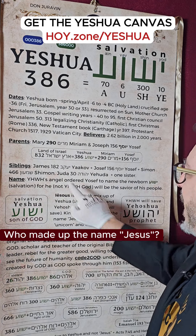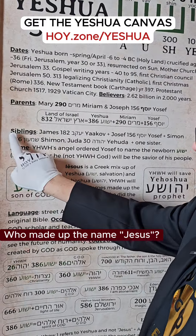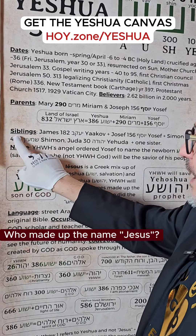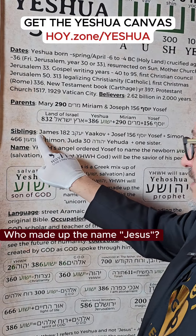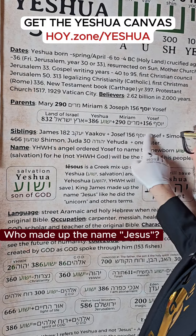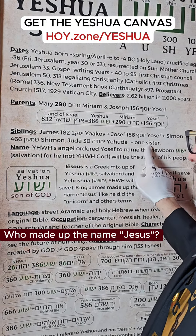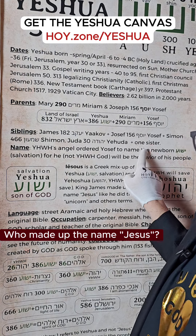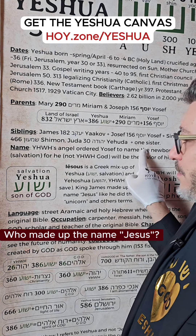Going back, we can find that Yeshua had siblings — four brothers and one sister, though we do not know the sister's name.